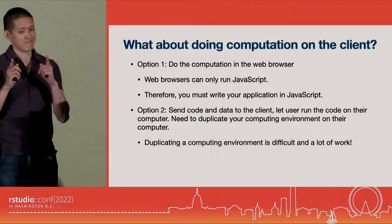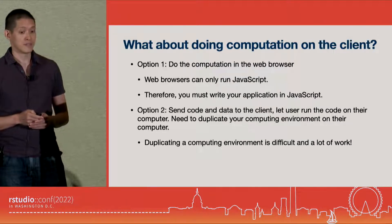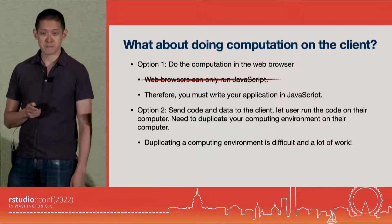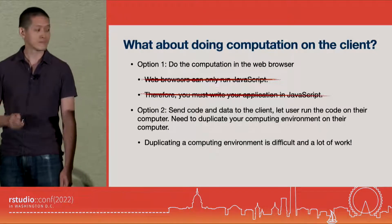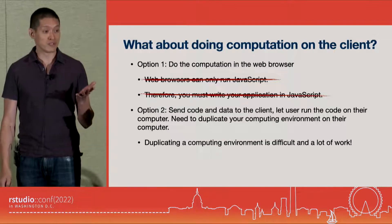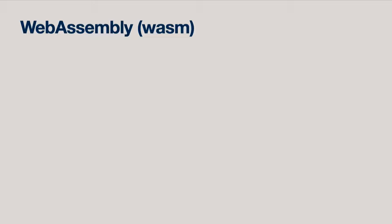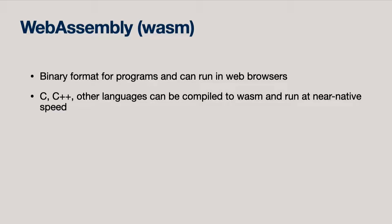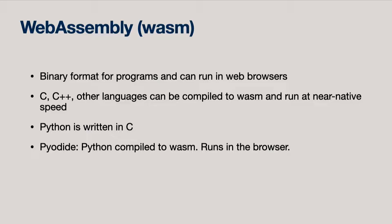This is actually the story of how things were back then, but things have changed. This part about web browsers only being able to run JavaScript is actually no longer true. So what other language do web browsers support now? There's something called WebAssembly, sometimes abbreviated WASM. This is a binary format for programs that can run in web browsers. You'd normally write code in C or C++ or some other languages and compile it to WebAssembly, and then you can run it in the browser at near-native speeds. It turns out Python is written in C, and there's a port of Python called Pyodide, which compiles to WebAssembly and can run in the web browser.